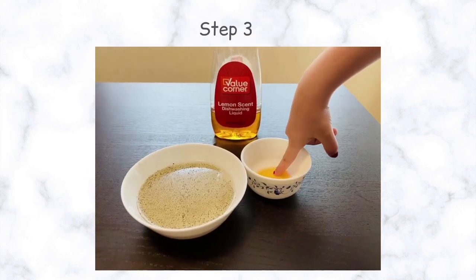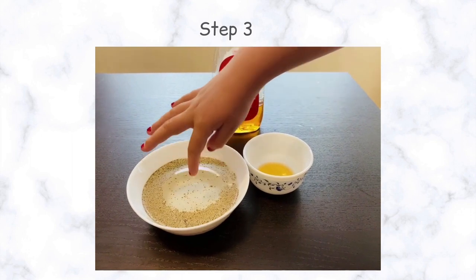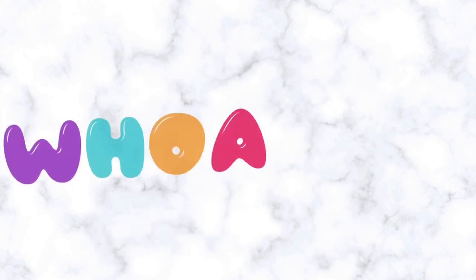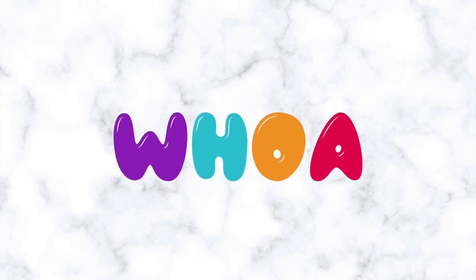Next, dip your finger into the dishwashing liquid and again, dip it into the bowl of water. This time, the black pepper instantly moves away from your finger. Let's find out why this happens.